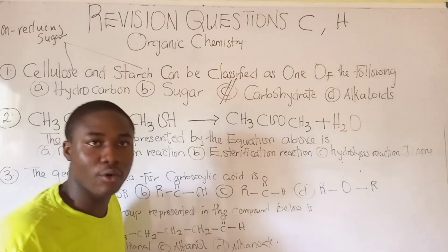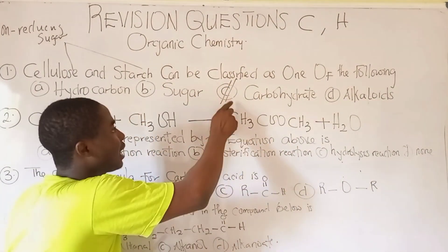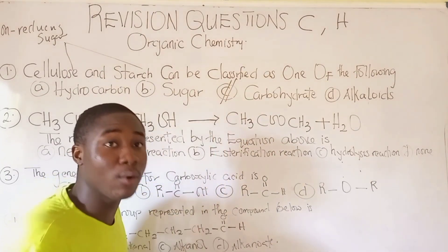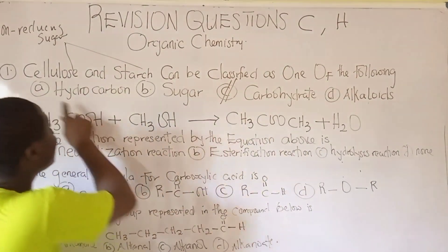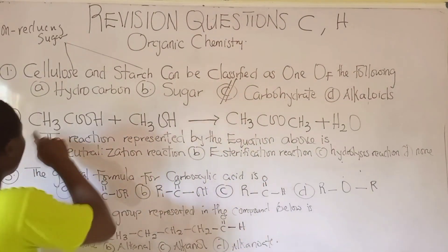So cellulose and starch are classified under carbohydrates — this is the correct answer to the question.